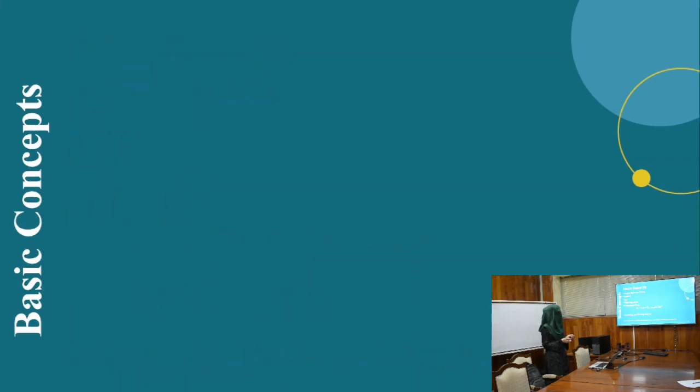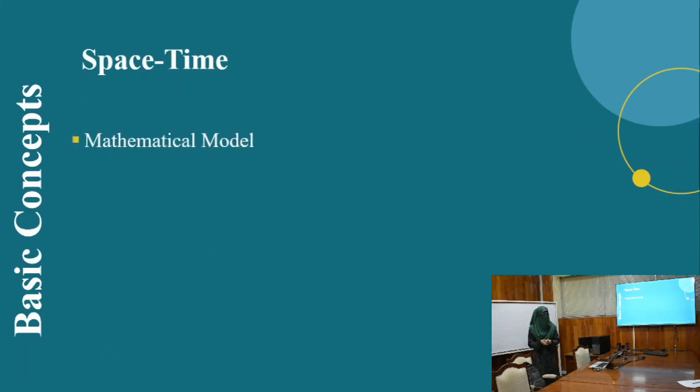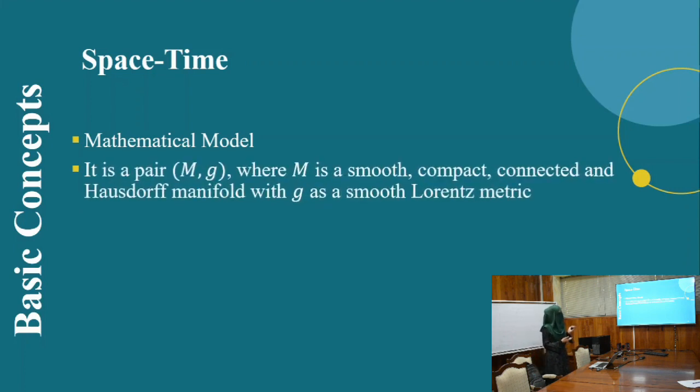Next one is spacetime. Basically, spacetime is a mathematical model that combines three dimensions of space and one dimension of time into a four dimensional single manifold. It is a pair (M,g) where M is a manifold and g is a metric tensor.